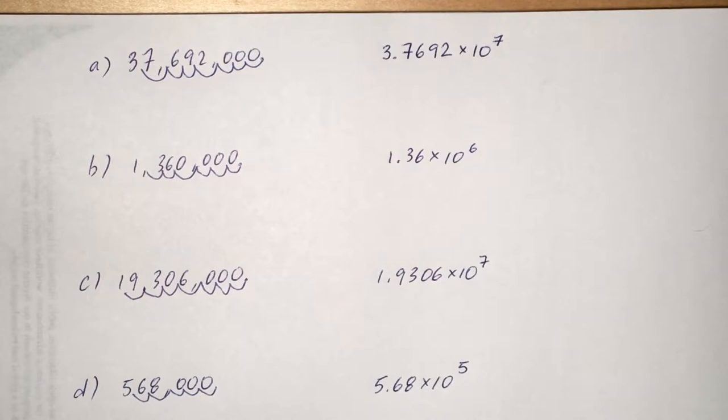In order to do this, you're going to find where the decimal point would be in these numbers. In all of them, it's after the last zero. Those zeros are not significant, though, so you want to remember that when you're writing it in scientific notation. Because in scientific notation, you're only going to write the significant digits.